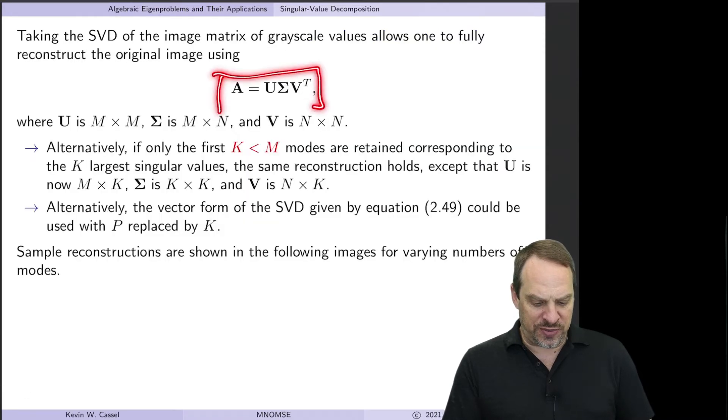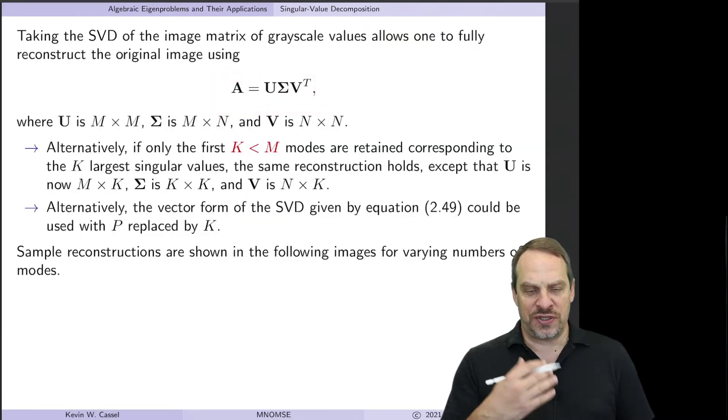If we do a singular value decomposition on that 768 by 1024 image, we get the U, the sigma, and the V.